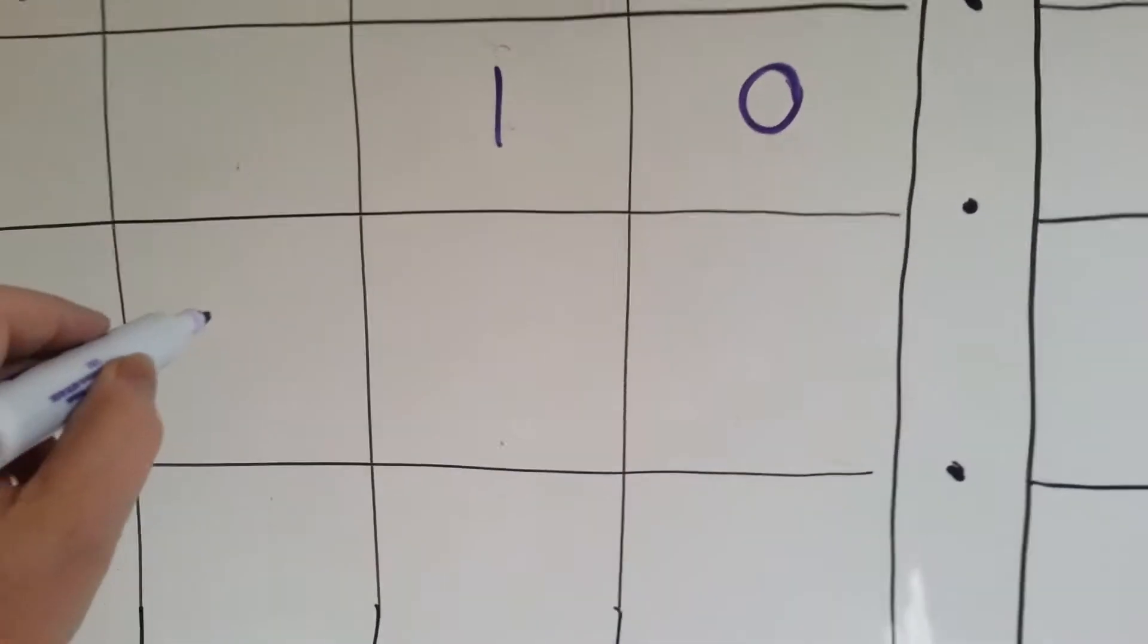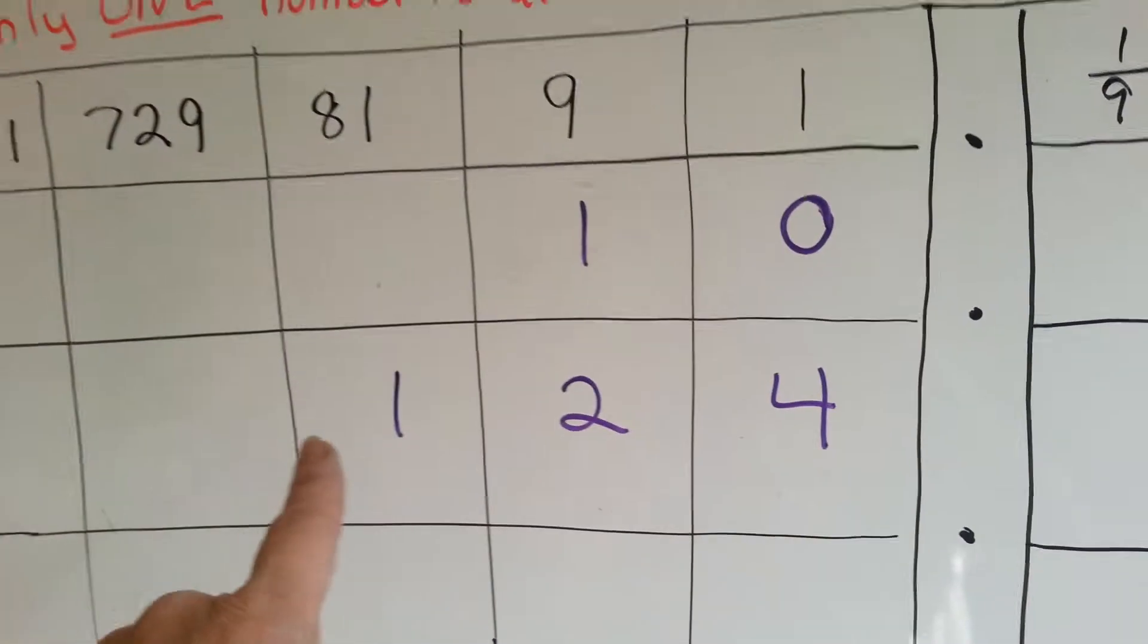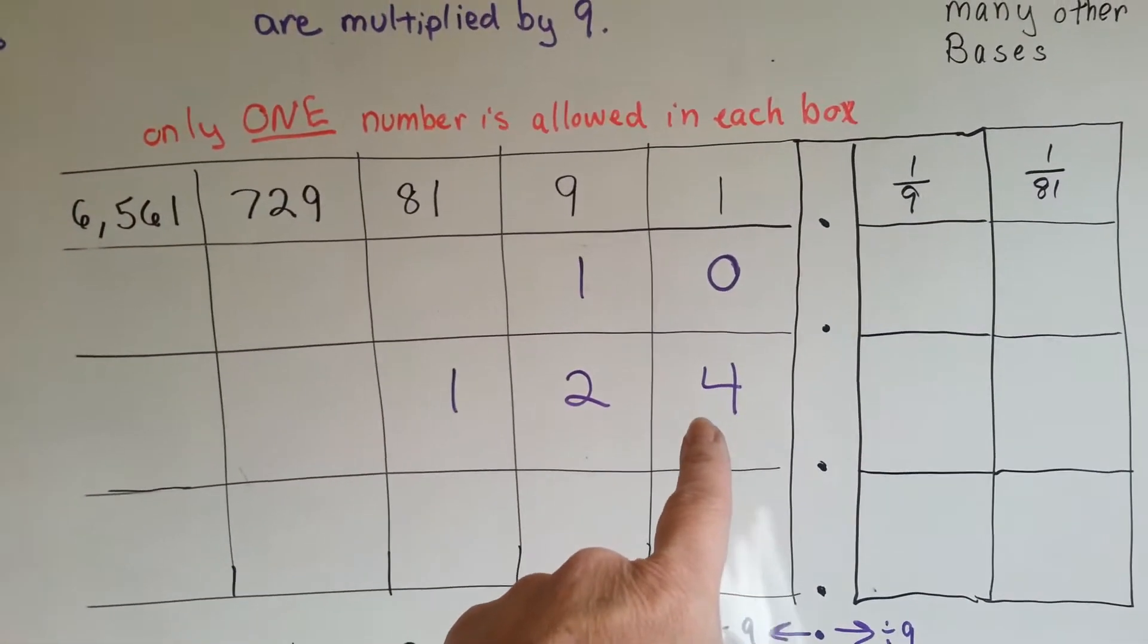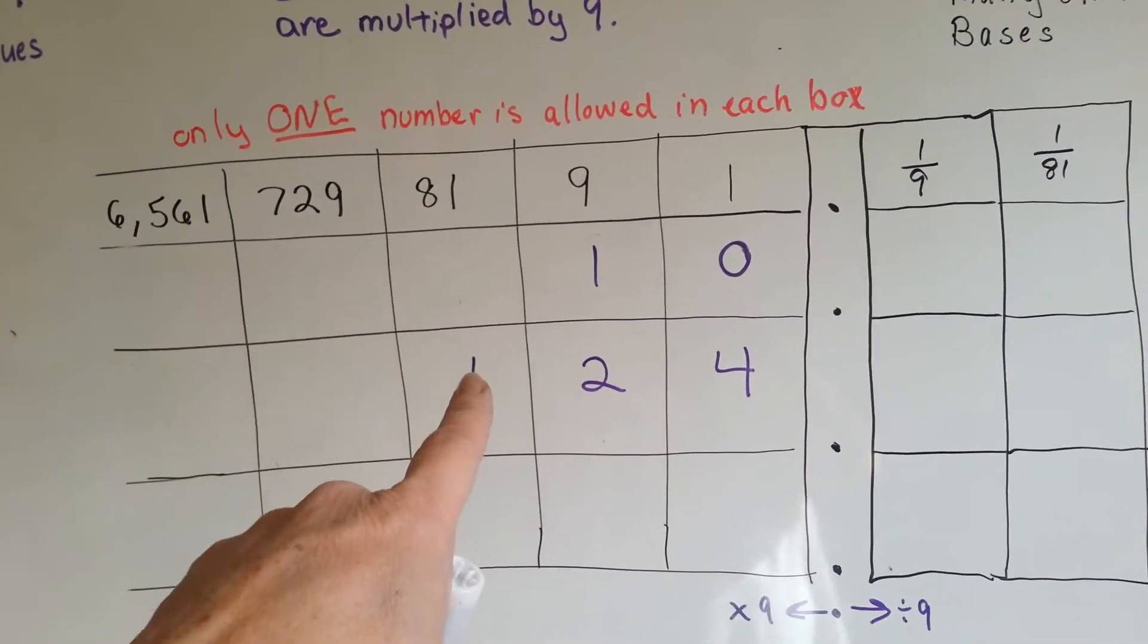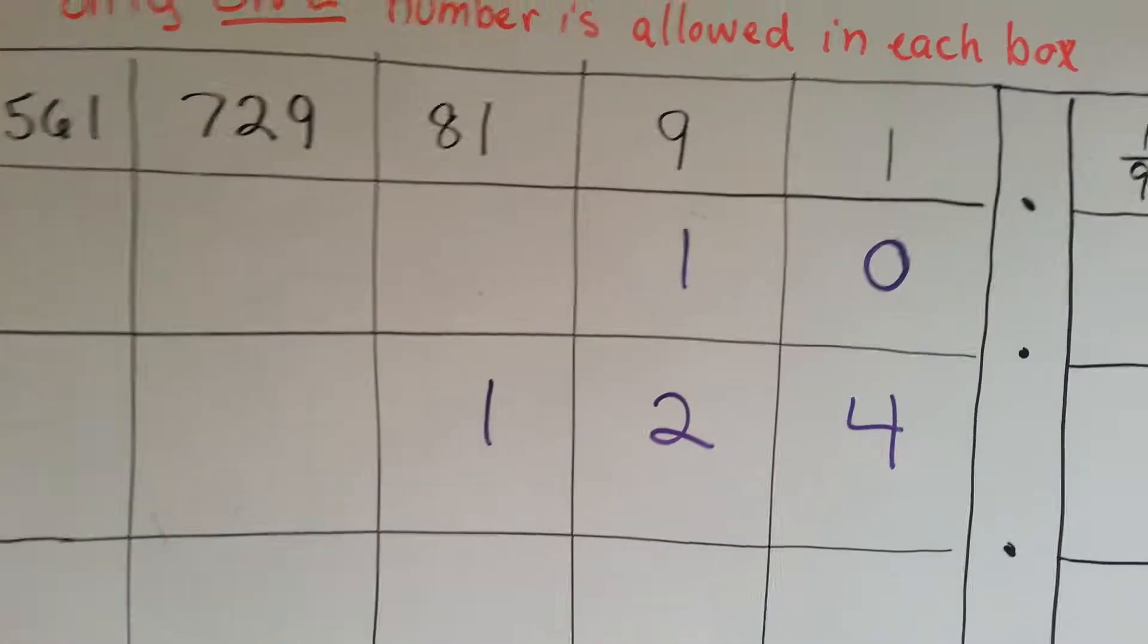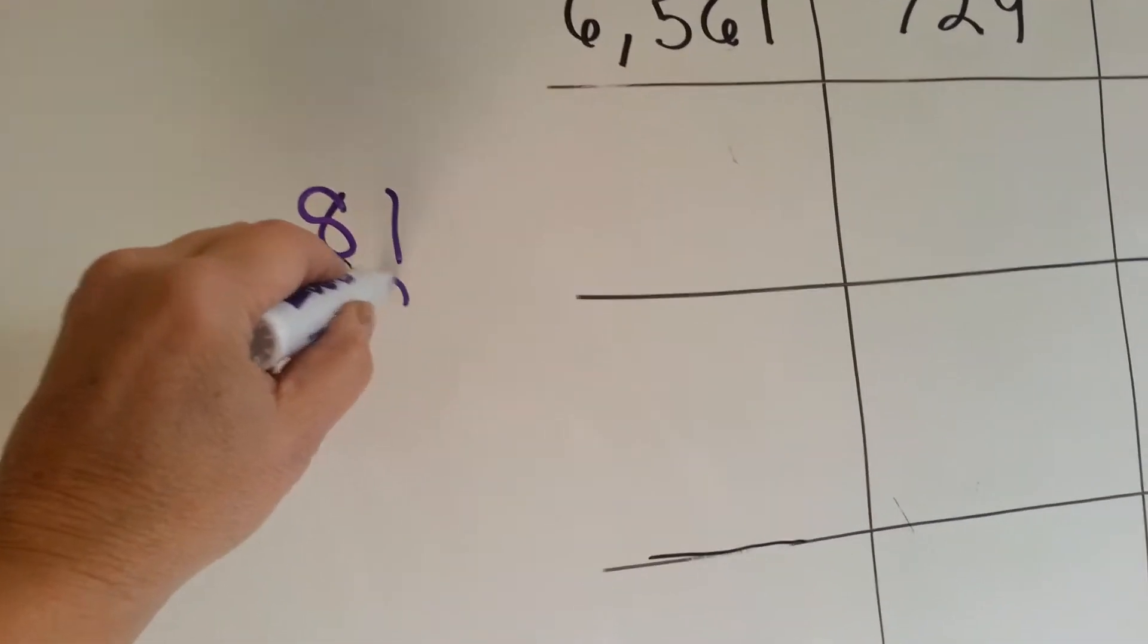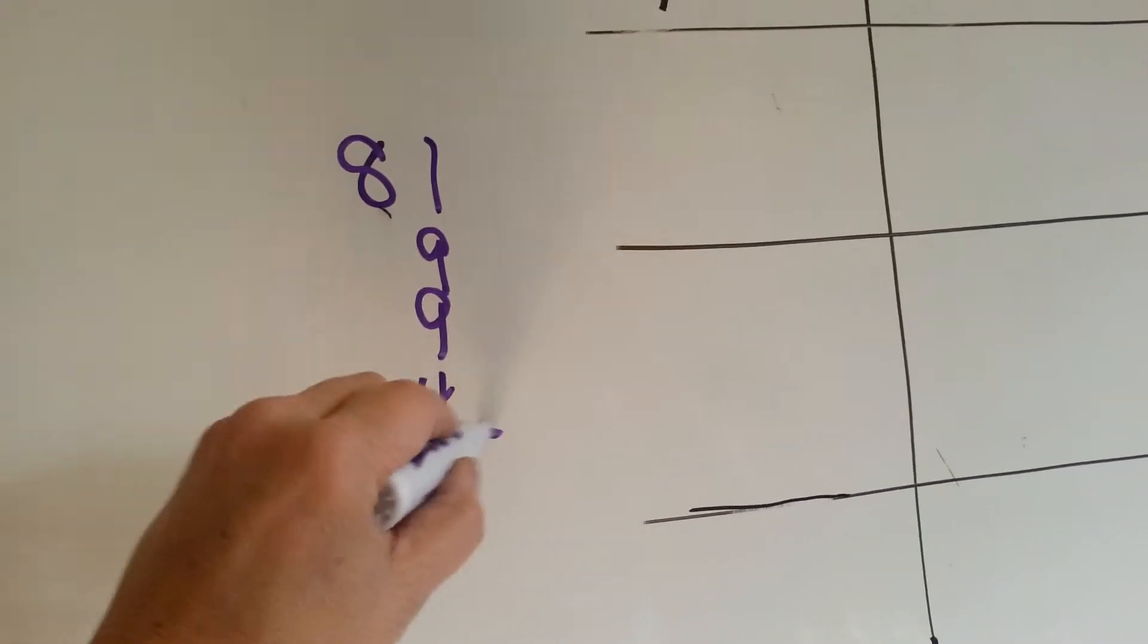So what would this number be? 1, 2, 4. Well, it means you have an 81, 2 nines, and 4 ones. You have, let's see if we can do this, an 81, 2 nines, and 4 ones.